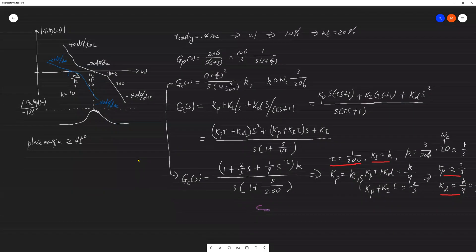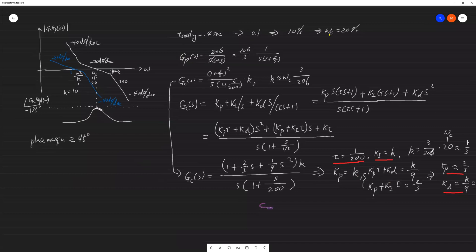This is from last time. From settling time, we obtained omega c, the crossover frequency. From the kernel function, we obtained the original magnitude plot.